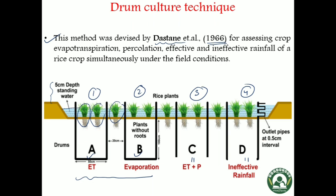In drum one, we grow a normal rice crop with roots and shoots. But in drum two, the rice crop has no roots — these are dead plants. The shoots are present but the roots have been removed. Coming to drum three, a normal rice crop is there but the bottom of the drum is not there. And in drum four, it is similar to drum three — the plant is alive with roots and shoots and no bottom — but an additional attachment is there: an outlet through which excess rainfall will be collected.